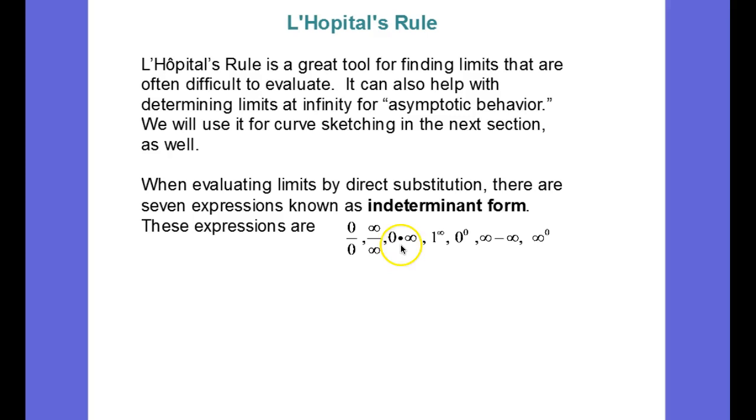But there are five others: 0 times infinity, 1 to the infinity power, 0 to the infinity power, infinity minus infinity, and infinity to the zero power. And so typically what is done in more advanced calculus is that when you encounter one of these remaining five forms, if you can try to rewrite it in such a way that you get one of these and then apply L'Hopital's rule.